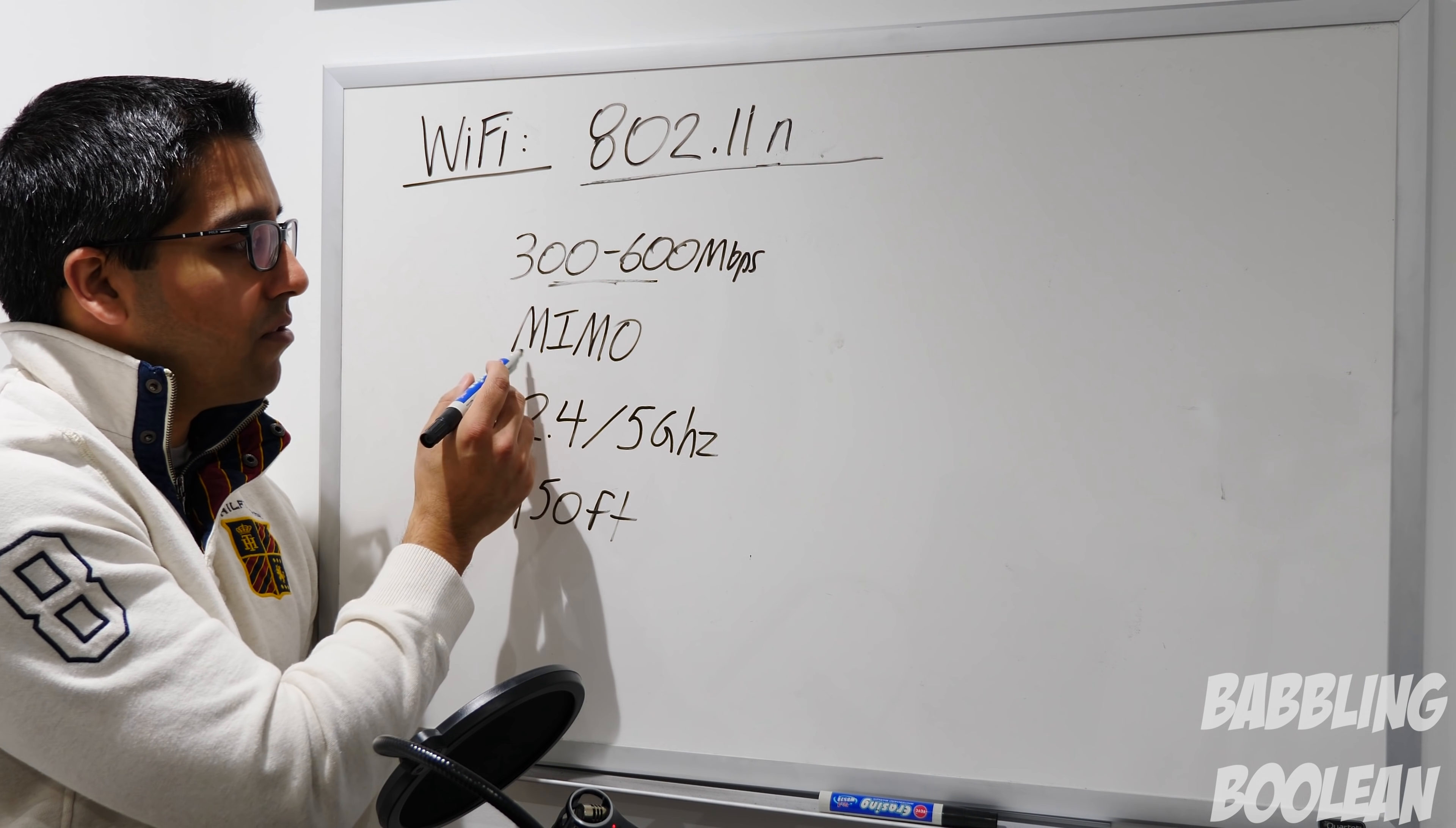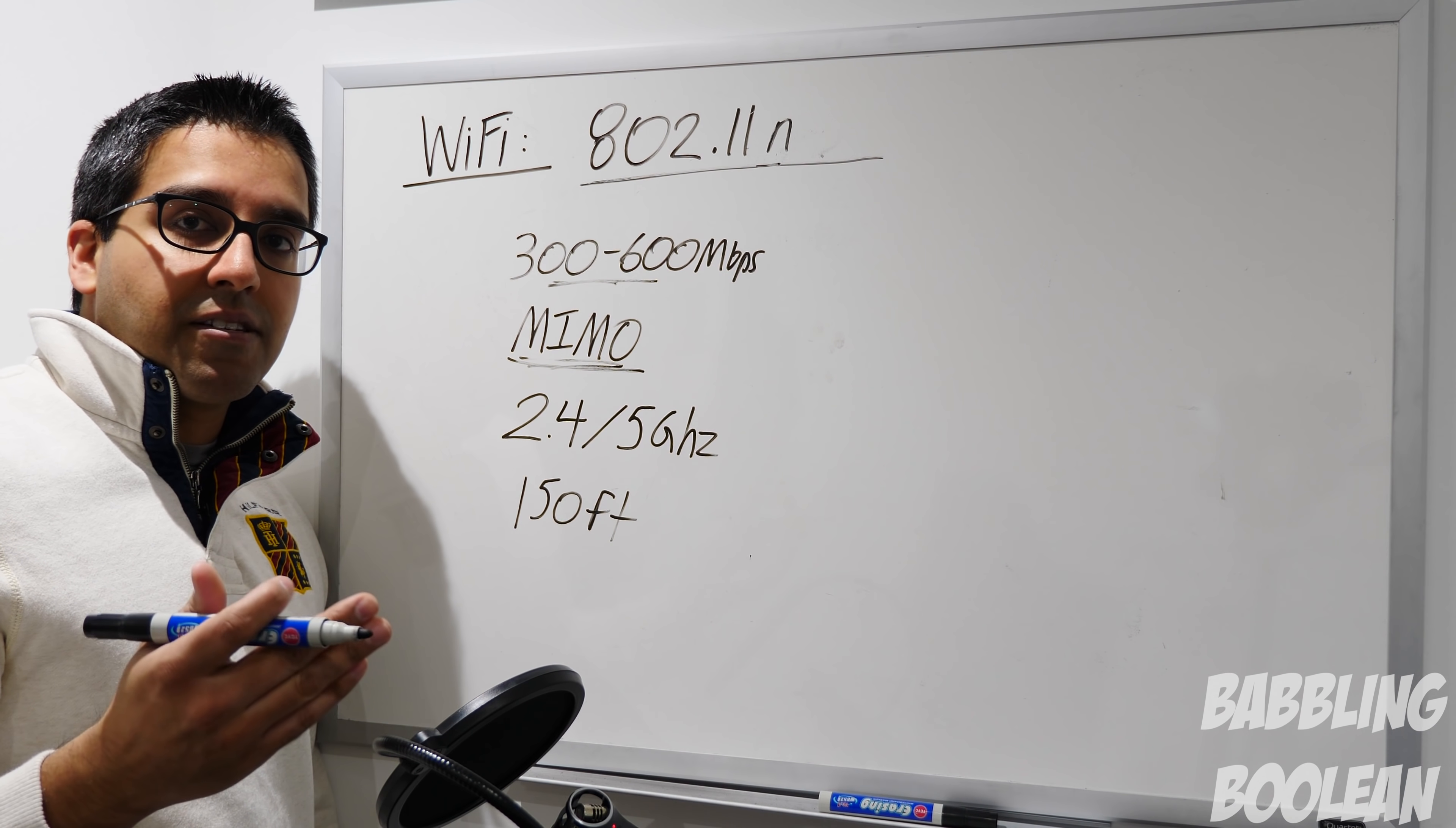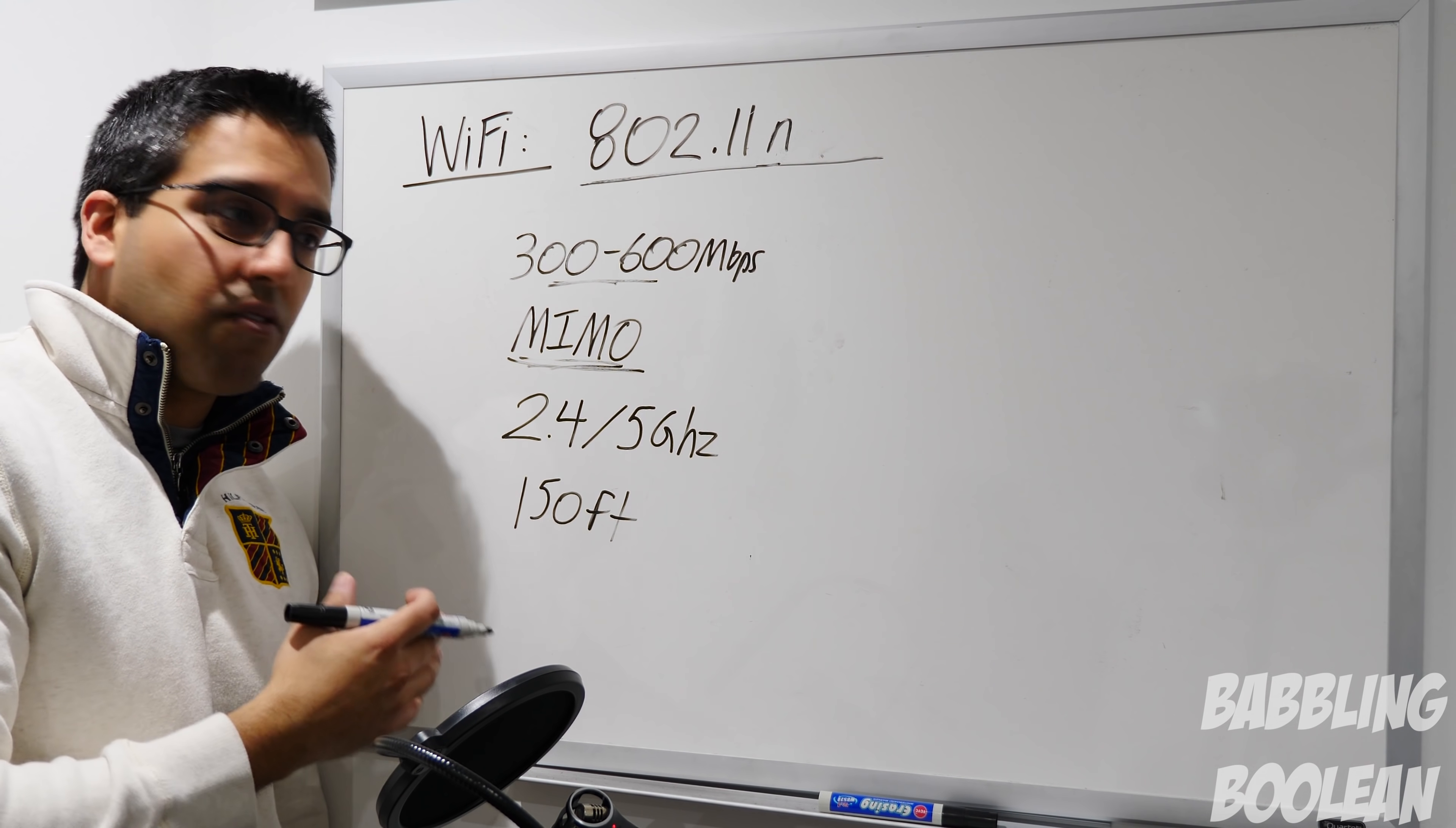The other thing it introduced was Multiple Input Multiple Output - MIMO. That's what this stands for. You might see that very often. What this means is that it allows for a lot more connectivity to a single access point. More devices and people could connect to an N access point or router than previously allowed before. You have more signal conflict before, not as much with N technology.